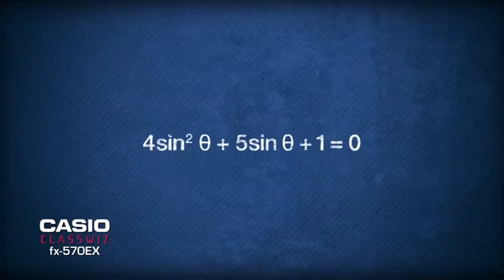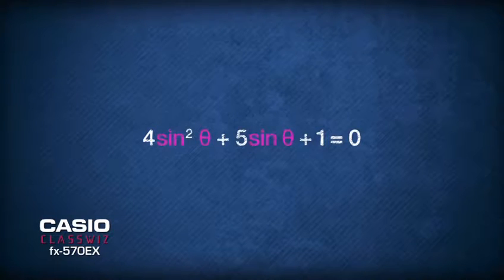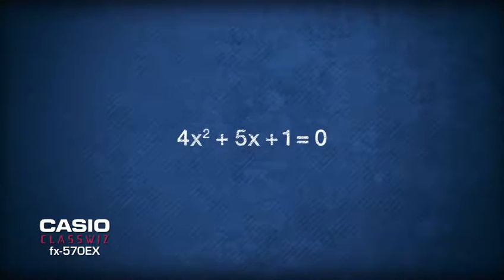Notice that this is a quadratic equation with trigonometry as variables. If you can't see it, imagine sinθ as a single parameter x. We then have a clear quadratic equation of 4x squared plus 5x plus 1 equals 0.